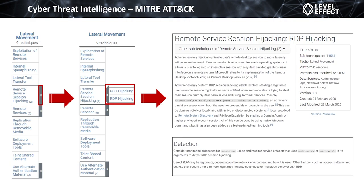The ATT&CK framework provides an overview of what RDP hijacking is as an educational tool, then gives references to actual adversary use — for example, a Mandiant or FireEye report describing how remote session hijacking via RDP was conducted in a specific investigation, or which named adversary group uses it. We can then review that report and find detection or remediation mechanisms. At a high level, we drill from tactics to techniques to a page providing insight, awareness, and means to detect that activity in our network.